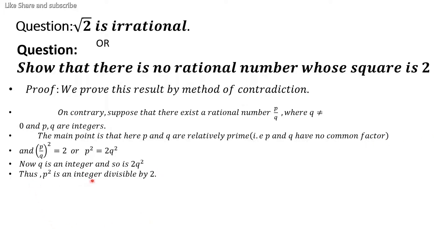Thus p² is an integer divisible by 2. Since p² = 2q², p² is divisible by 2, and therefore p is also divisible by 2. This is because if you take an integer, square it, and the square is divisible by 2, then the integer itself must also be divisible by 2.